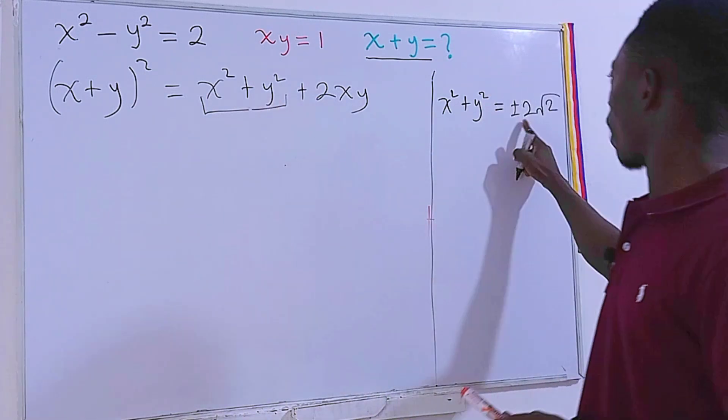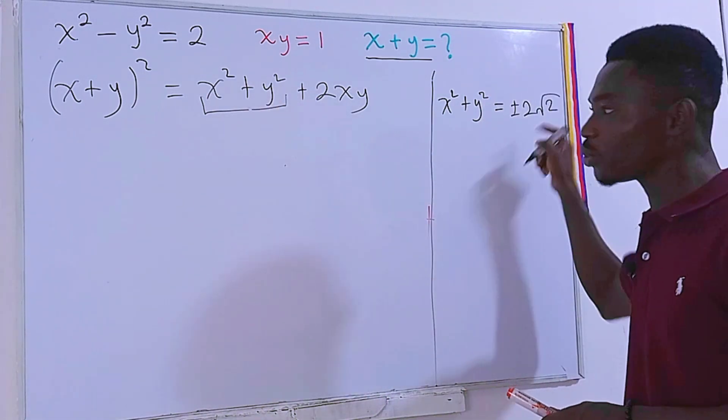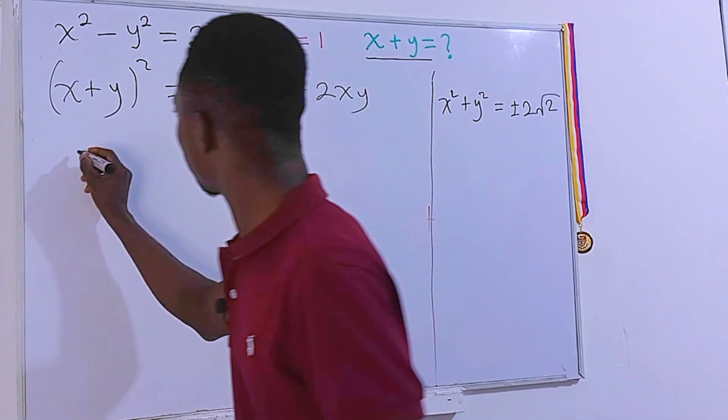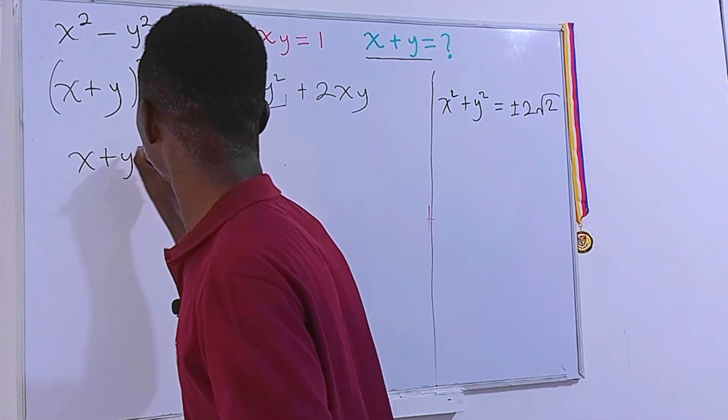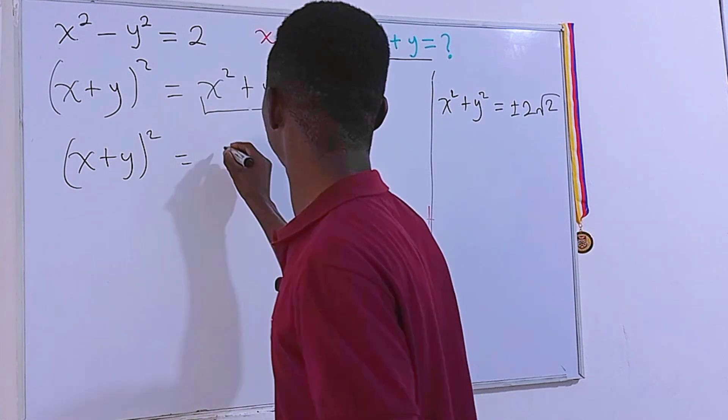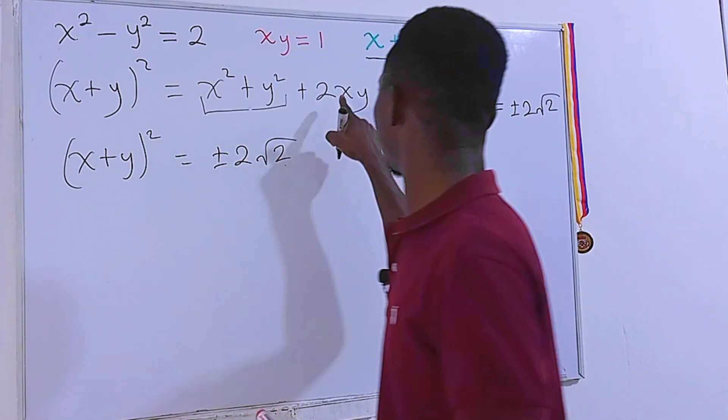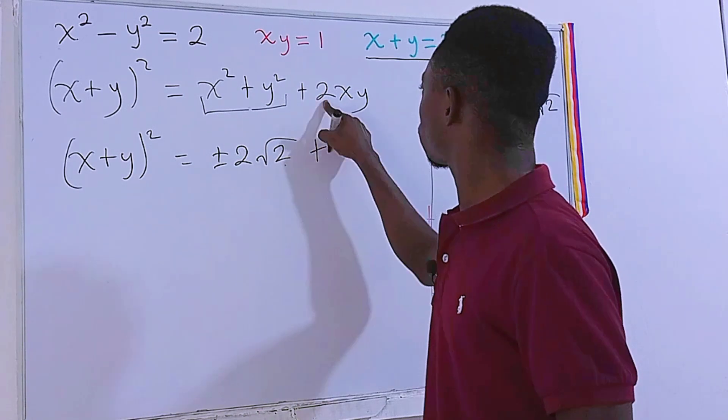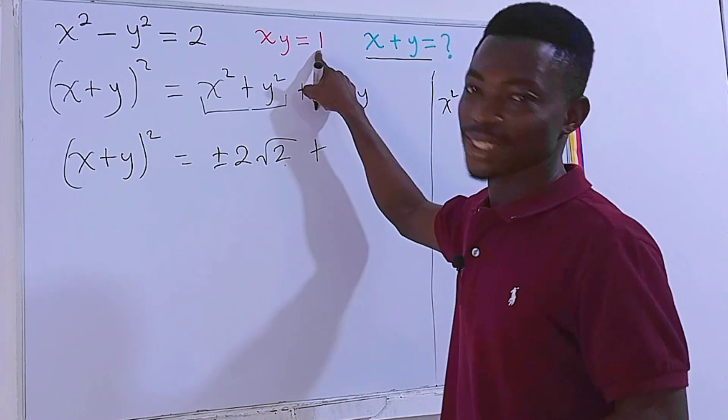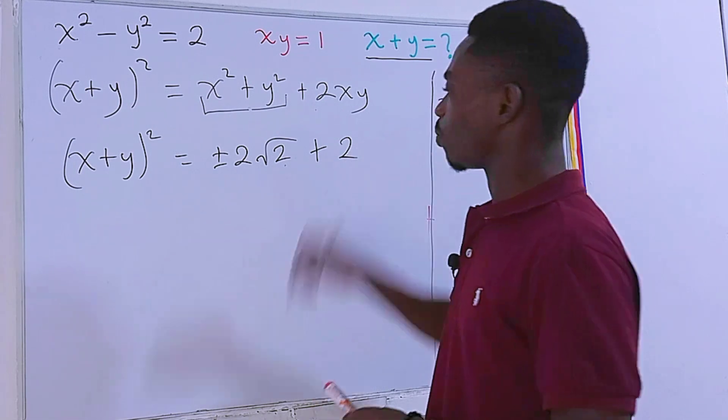Easy, because I know what the value of this is. The value of this is right here, plus or minus 2 root 2. So in fact, we're going to have x plus y squared is equal to plus or minus 2 root 2, then plus 2xy, which is still 1. So we're going to have 2 right here.